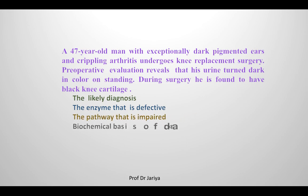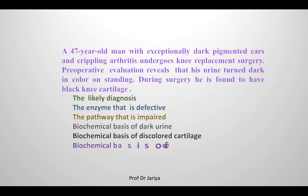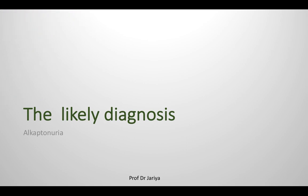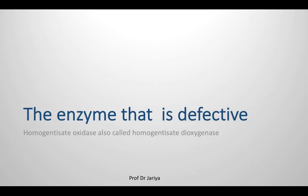There is a case of a middle-aged man presenting with pigmentation of ear and knee cartilage, with urine that turns dark on standing. The likely diagnosis is alkaptonuria. The cues to diagnosis include black knee cartilage and dark discoloration of urine upon standing. Homogentisate oxidase is defective, and the likely cause is a recessive mutation.